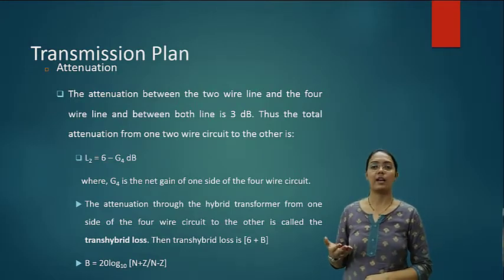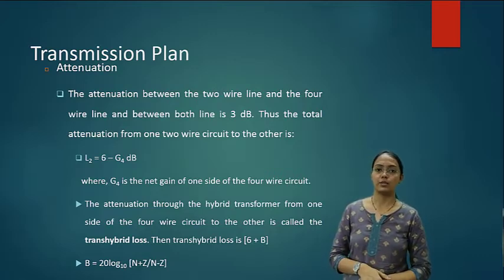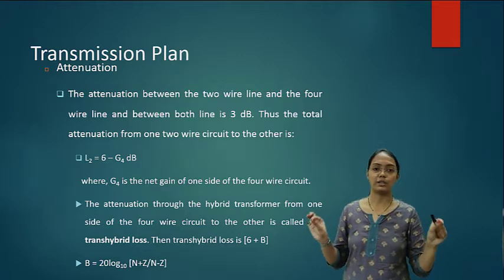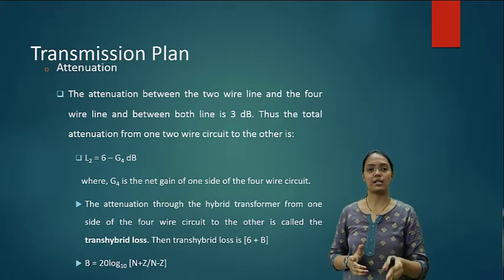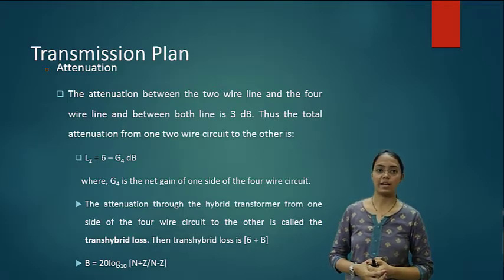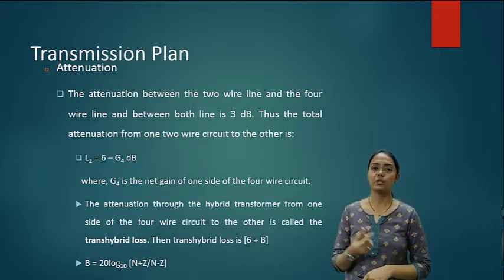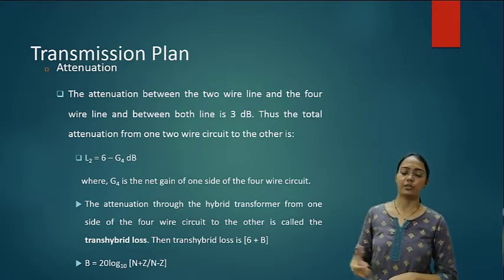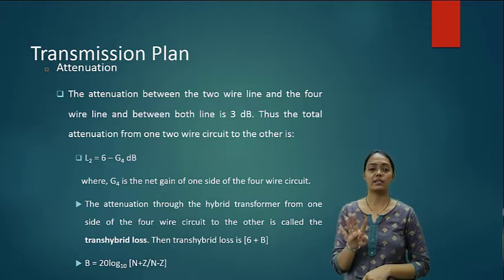Another element of the transmission plan is attenuation. Attenuation is the loss of signal between two points from which information is transmitted. The attenuation between the two-wire line and the four-wire line is 3 dB in the ideal case. The total attenuation from one two-wire circuit to the other is (6 − G4) dB, where G4 is the net gain of one side of the four-wire circuit.